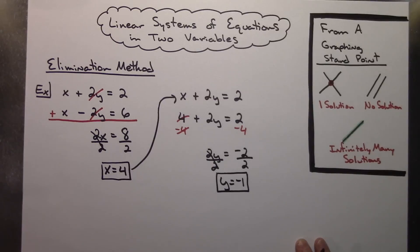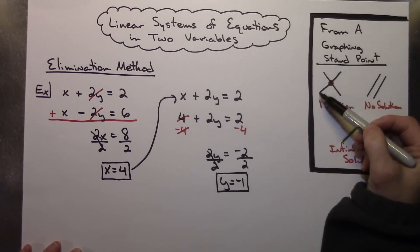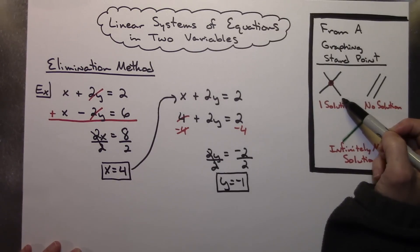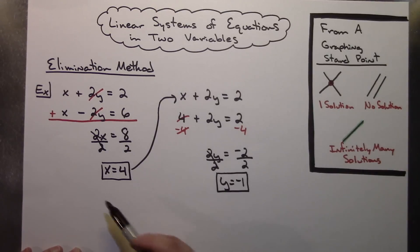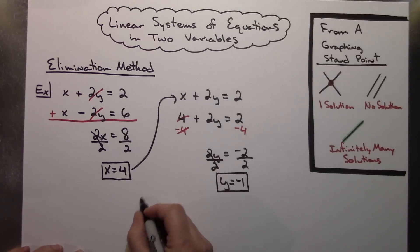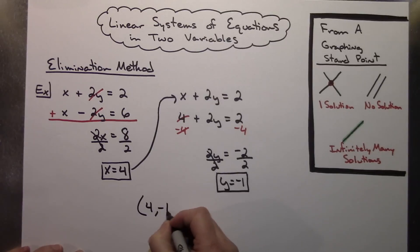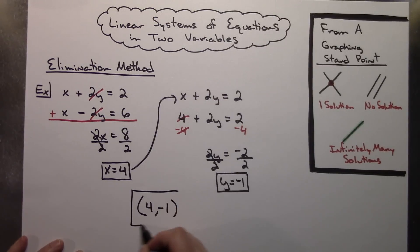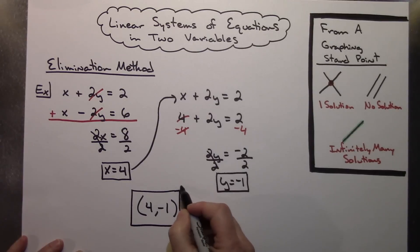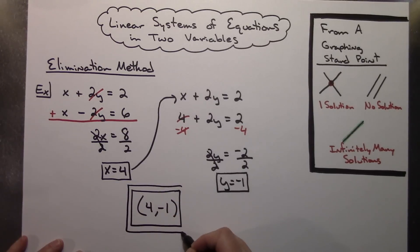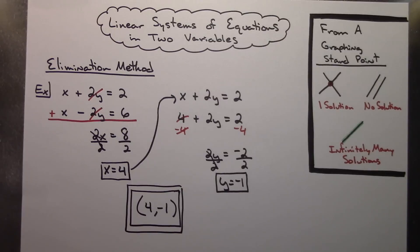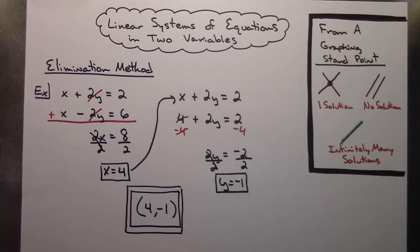Keeping in mind what the solution really looks like — if these were two lines that crossed and we graphed it, the answer would be written as an ordered pair. I have an x value and a y value, so the solution is the ordered pair (4, -1). That is the easiest type of elimination problem because without doing any extra work, those y's fell out right away.